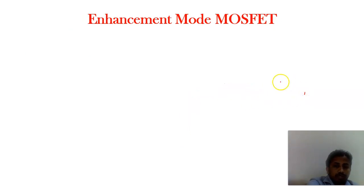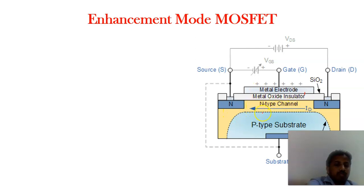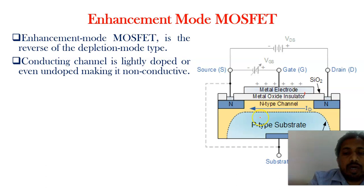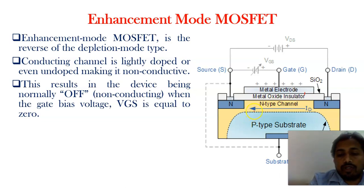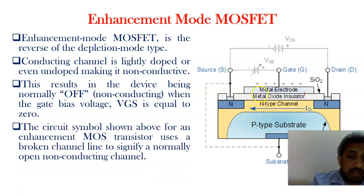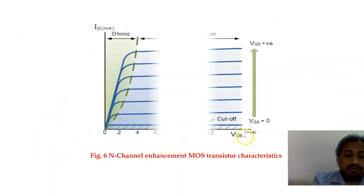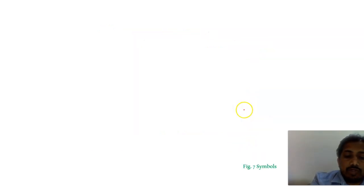Coming to enhancement MOSFETs, the channel is not created initially. Once you apply a positive voltage at the gate — called the threshold voltage — and the applied voltage is greater than the threshold, the channel will be created. These are the characteristics of an N-channel enhancement MOSFET.